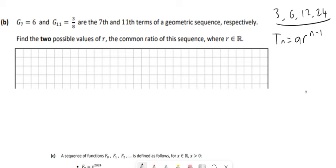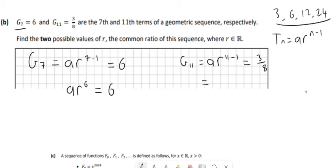A is always the first term in the sequence, R is always the common ratio. So G7, that would be AR to the power of 7 minus 1, and we know that has to be equal to 6 because G7 is 6. So AR to the power of 6 has to be equal to 6. Then G11 has to be equal to AR to the power of 11 minus 1, and that has to be equal to 3 over 8. So AR to the power of 10 has to be equal to 3 over 8.